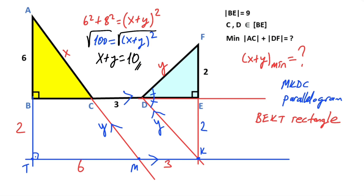Or you can think like this — let's call here alpha. This angle and this angle is also alpha, and here is alpha because of the parallel lines, and then this angle must also equal alpha.